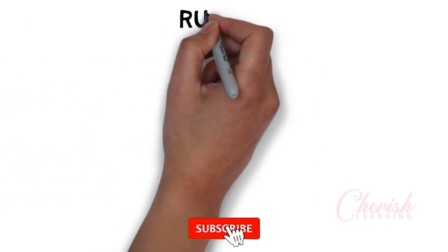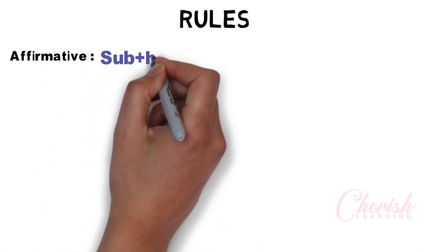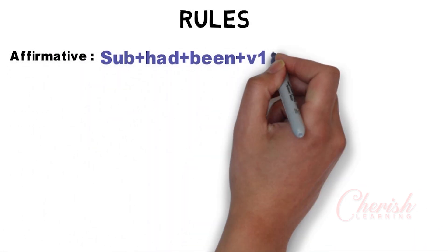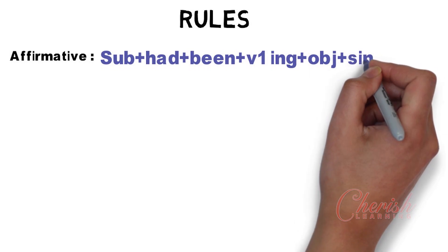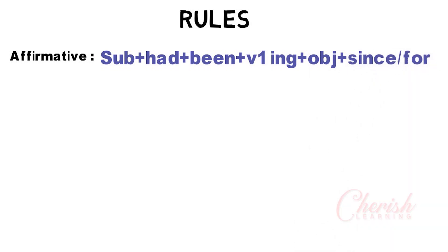Now let's go to the rule. How do we make the rule? Let's start with the subject. Subject, then 'had,' then 'been,' then verb, then 'ing,' then object, then 'since' or 'for.'